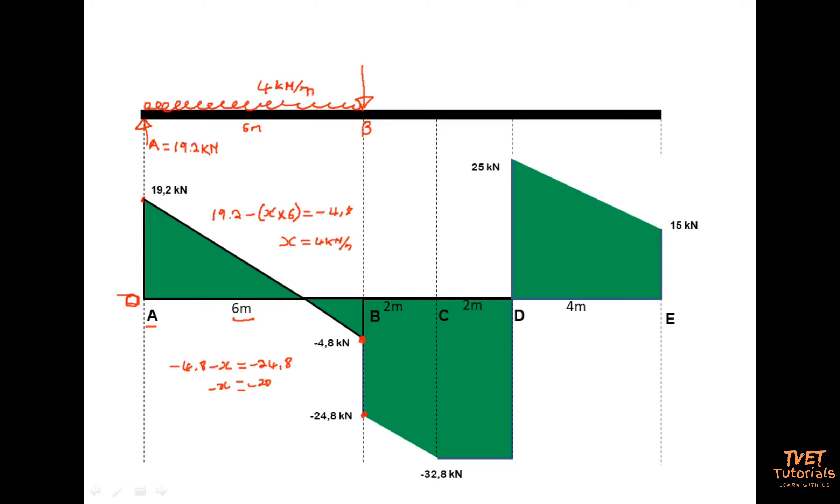Therefore 20 is my magnitude of the point load, 20 kilonewtons. Another way is saying what is the difference or what is the gap between negative 24.8 and negative 4.8. So you take 24.8 you subtract with negative, so you will end up with a minus minus which is a plus. So minus 24.8 plus 4.8 you end up with a positive 20. So that is the magnitude of the point load that took me from negative 4.8 to negative 24.8.